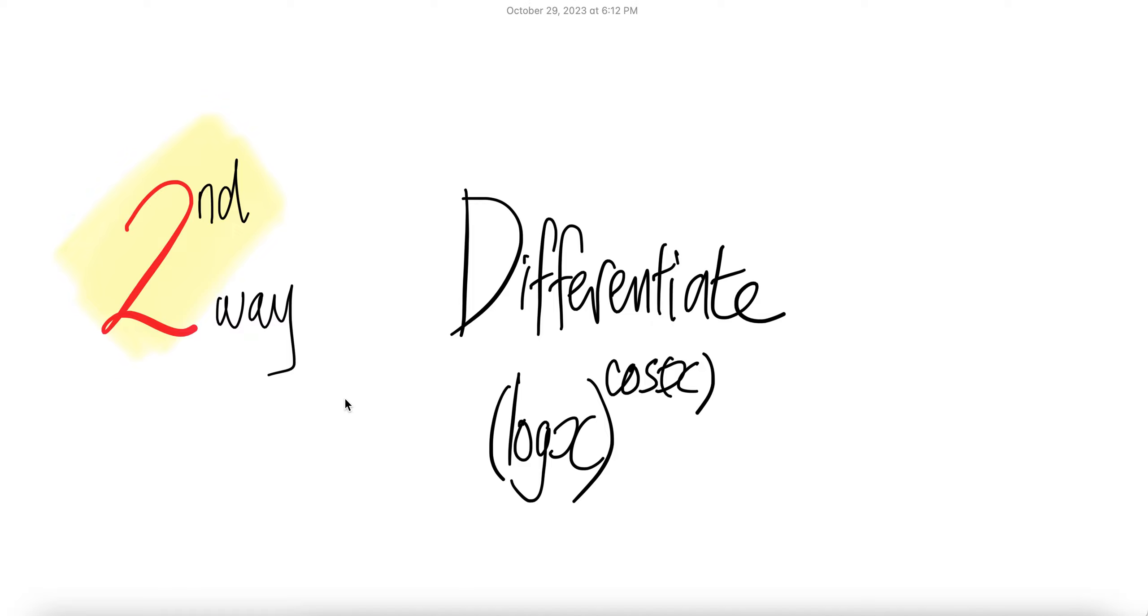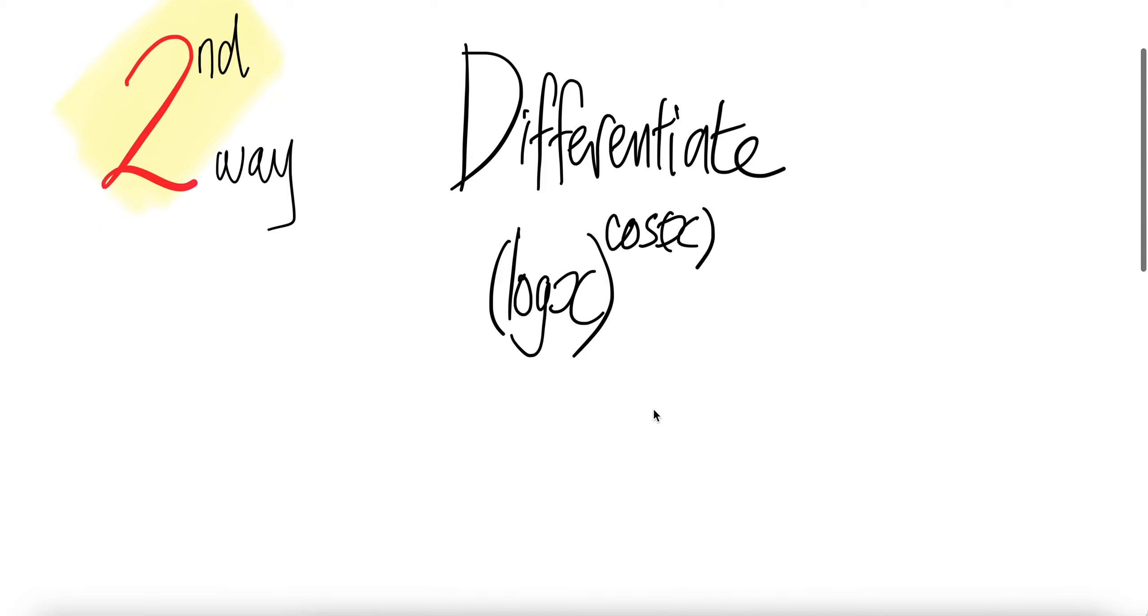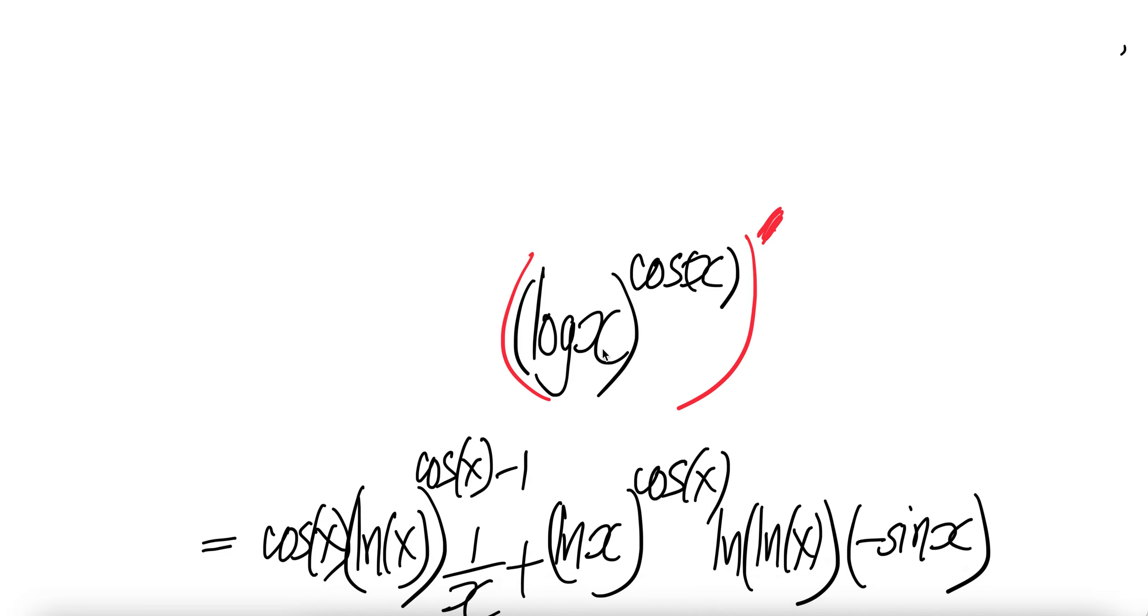Let us look at the second way to differentiate log X to the power of cosine X. Here, log X is ln X or log X to the base E.